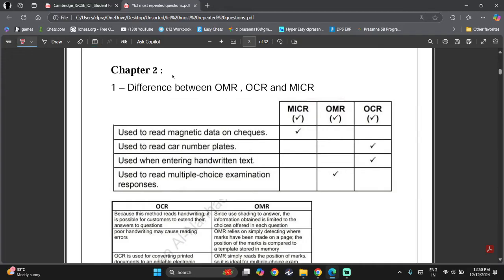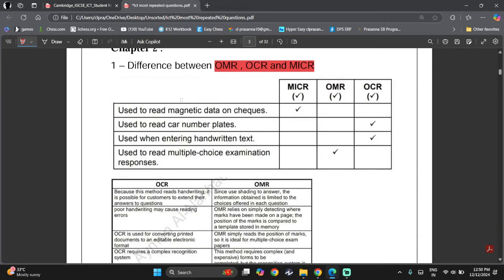So first of all, we need to know the difference between OMR, OCR and MICR. OMR stands for Optical Mark Reader, OCR stands for Optical Character Reader and MICR stands for Magnetic Ink Character Reader. So let's see which one uses magnetic data on checks. For checks, we always use MICR.